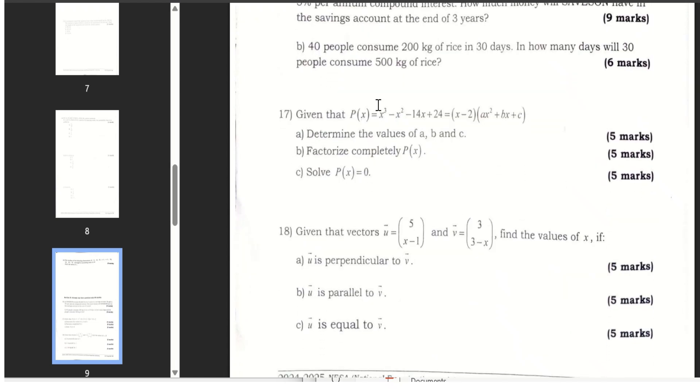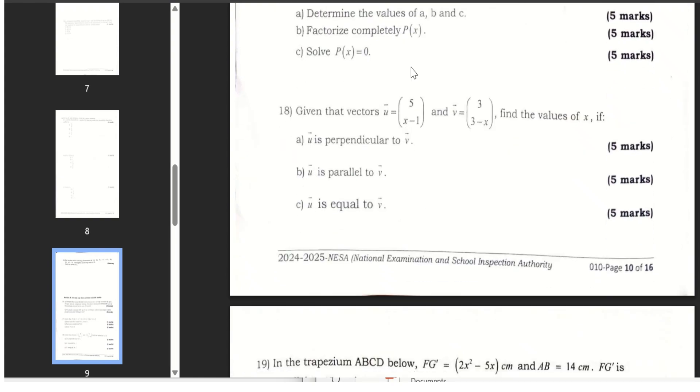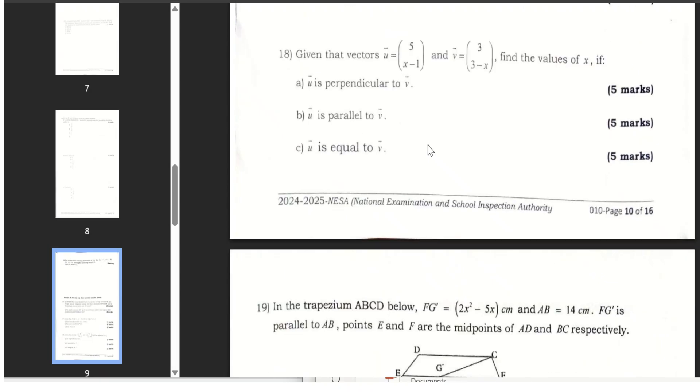How many days will people consume about this rice? This is the question also finding the values of a. You can also factorize or might try this so that you can get the value of a and b and factorize completely and solve P equals zero.